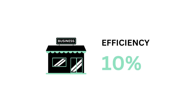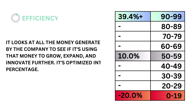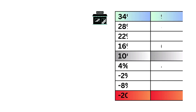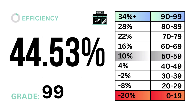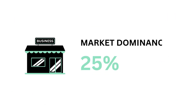Fifth, efficiency, which accounts for 10% of the business factor. Efficiency looks at all the money generated from the company to see if it's using that money to grow, expand, and innovate further. It's optimized into a percentage. The models tell us that an efficiency rate of 10% is considered average. Here's our efficiency rate and efficiency grade.